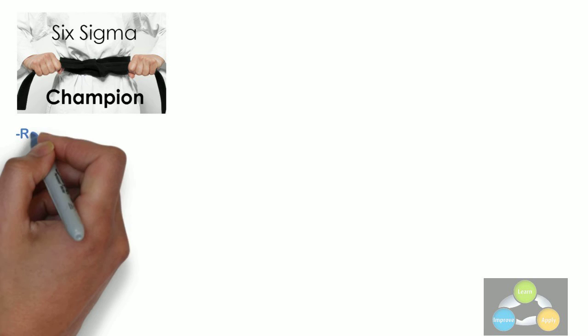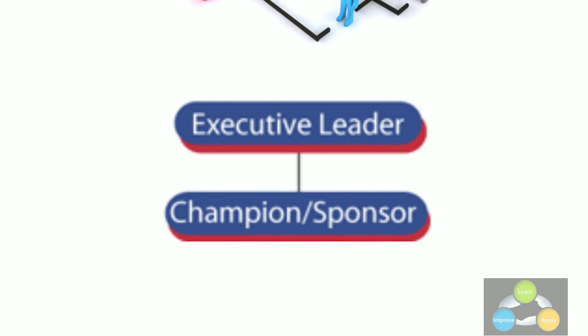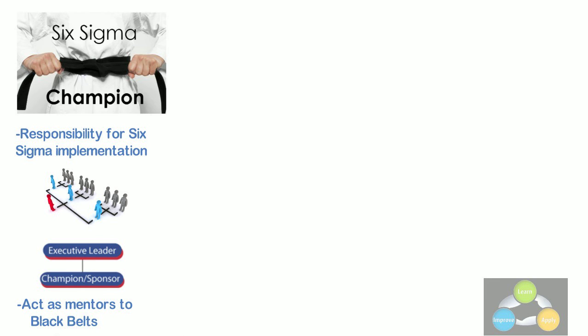Champions. They take responsibility for Six Sigma implementation across the organization in an integrated manner. The executive leadership draws them from upper management. Champions also act as mentors to Black Belts.